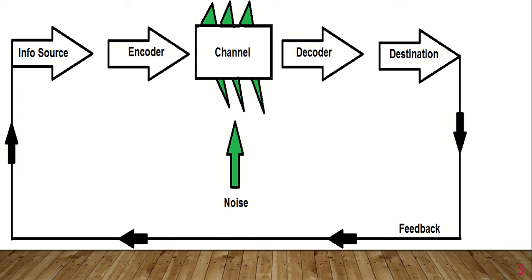The channel is the cell phone wires itself, while the noise may occur when the speaker mumbles or anything that can be a barrier to communication. The decoder is the telephone of the receiver of the call, which turns the binary data packages it receives into sounds that replicate the voice of the sender.